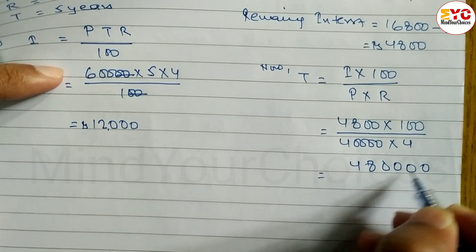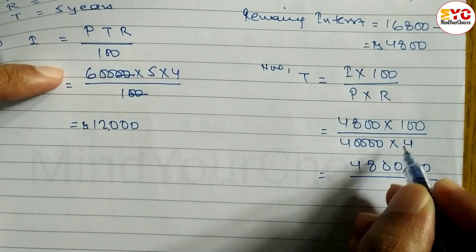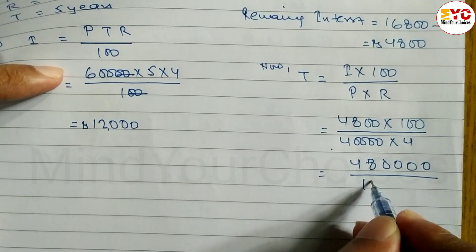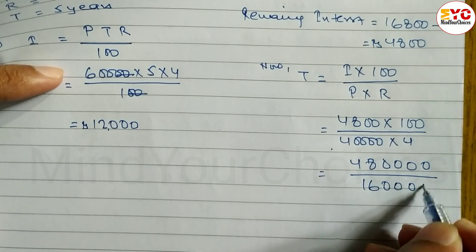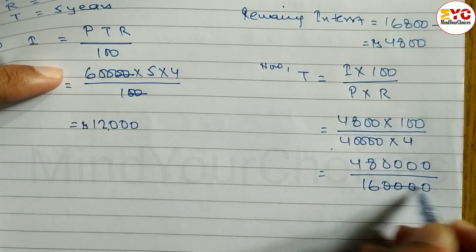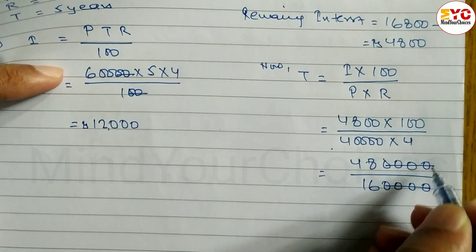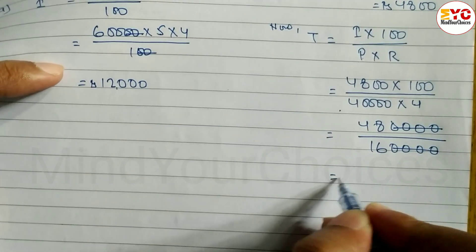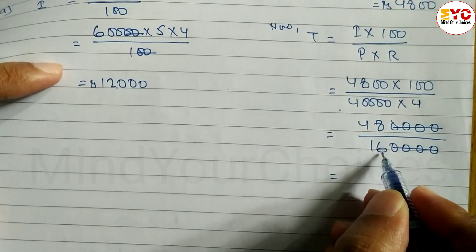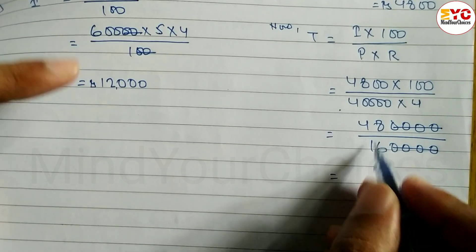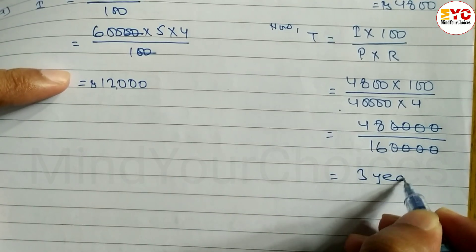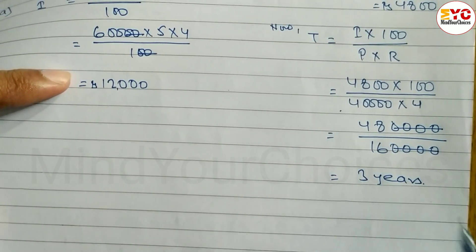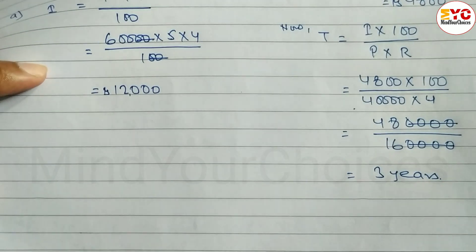Calculating: 4,800 divided by 4 gives 1,200; after cancelling zeros and simplifying further, we get 3 years. So T is equal to 3 years.